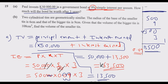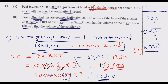Question b: Two cylindrical tins are geometrically similar. The radius of the base of the smaller tin is 6 cm and that of the bigger tin is 9 cm. Given that the volume of the bigger tin is 108 cm³, find the volume of the smaller tin. Because these tins are geometrically similar, the ratio of their heights equals the ratio of their radii — the ratio remains the same throughout.